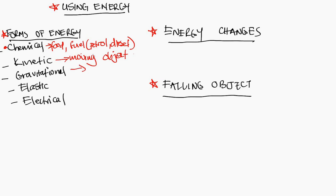The other forms are gravitational and elastic. These two - gravitational and elastic - are both forms of potential energy, so it's gravitational potential and elastic potential. It's the energy possessed by an object by virtue of its position or its state.